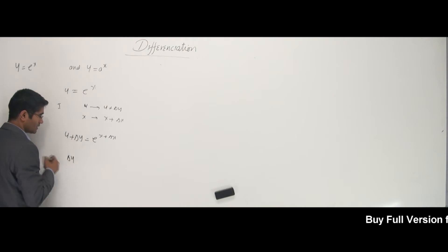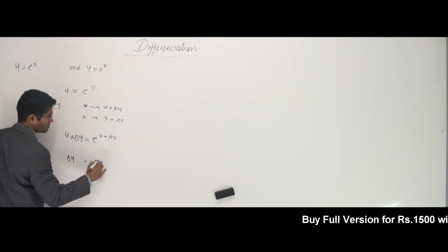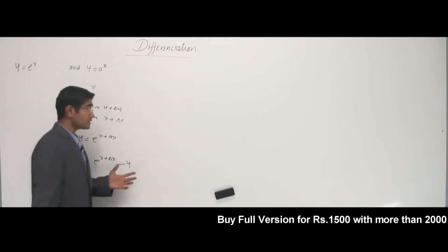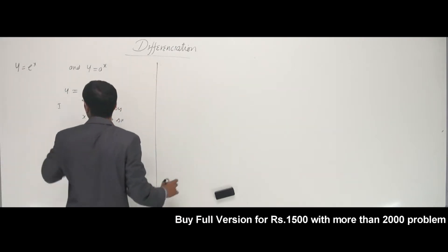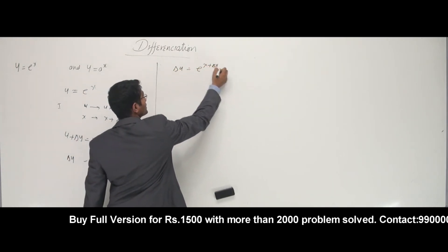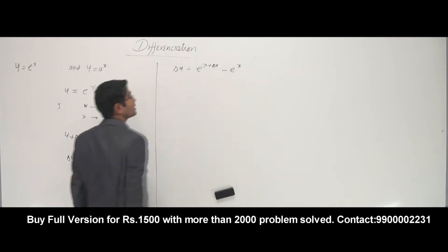And I keep delta y on one side, and put everything on the other side that goes like e power x plus delta x minus y. Now, what is y? The value of y is e power x itself, so I can write delta y is equal to e power x plus delta x minus e power x.